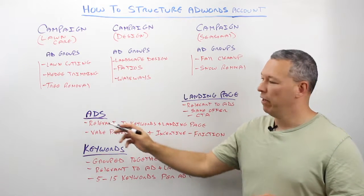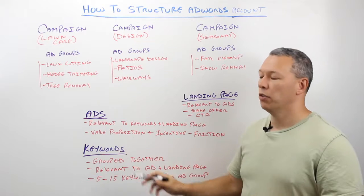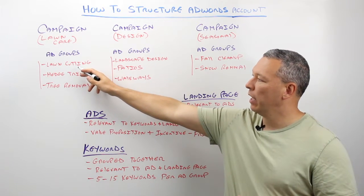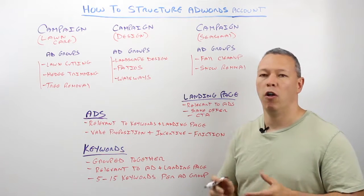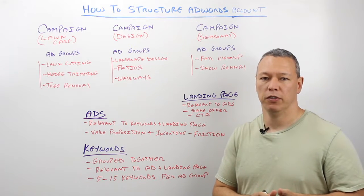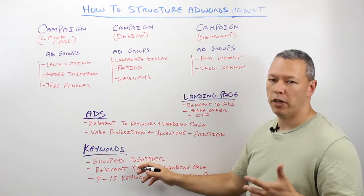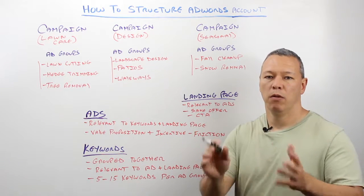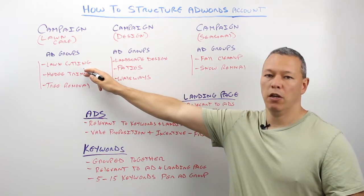Inside your ad groups, every ad group is going to have its own set of ads and its own set of keywords. If you're creating an ad group for lawn cutting, you want to make sure that your ads and your keywords are all relevant to somebody searching for lawn cutting or lawn care services. You want to make sure your ads are relevant to the keywords you're targeting, as well as the landing page — the URL that when people click on the ad, what page on your website are they going to go to. Make sure all of those are relevant to lawn cutting.